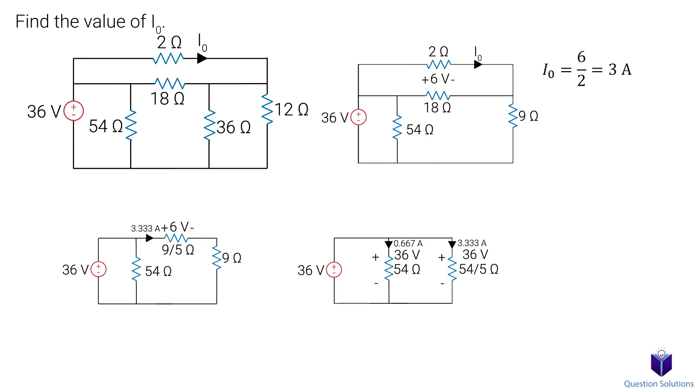We get 6 volts. Now remember, we combined these two resistors in parallel to get this resistor, so that means the voltage is the same for both. We can now solve for I0 using Ohm's law. We get 3 amps, and that's our answer.